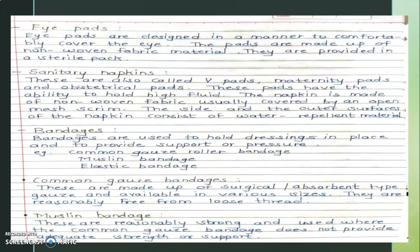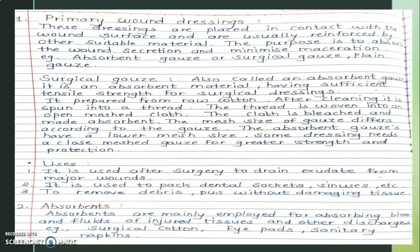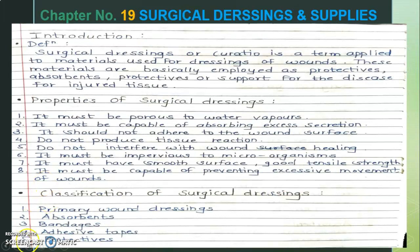The classification of surgical dressings is very important. There is a short form mnemonic: PABAP — P for Primary Wound Dressings, A for Absorbents, B for Bandages, A for Adhesive Tapes, and the last P for Protectives. This classification is called PABAP. Other covered parts include the introduction, definition, properties of surgical dressings — total eight properties.